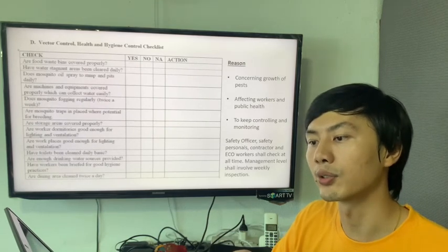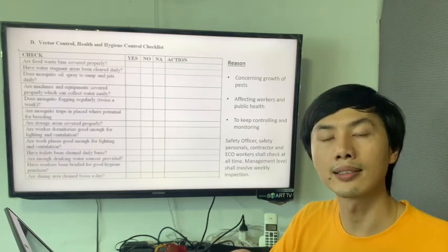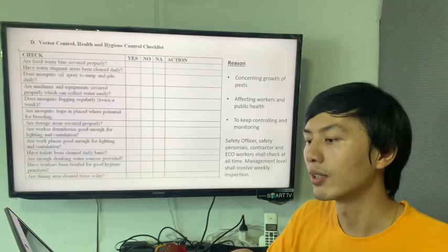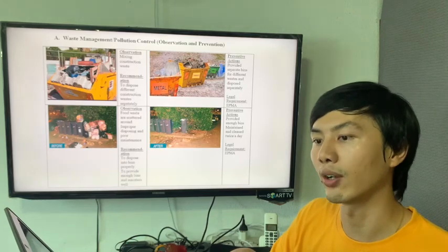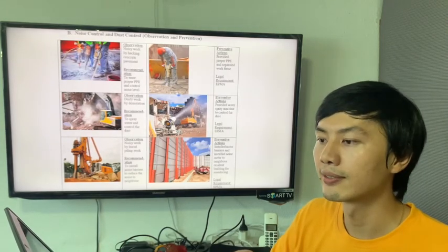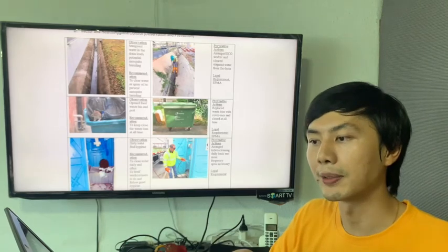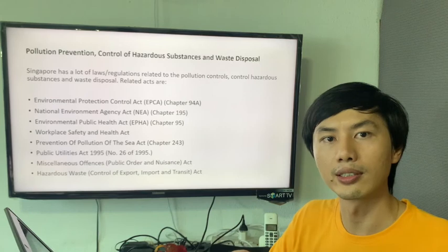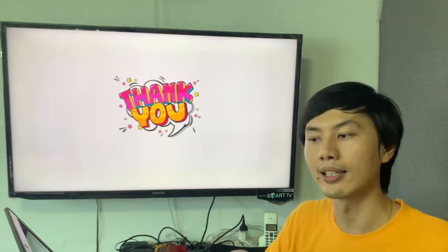Fatal control and health and hygiene control checklists are one of the most important for our workers' health and environmental health. We must take care of this. Here are the reasons, inspections, and how frequently they should be carried out. These are observations and prevention of waste management — before and after. Noise control and dust control — observations and prevention. Silt control — observations and prevention. Health hygiene control — observations and prevention. We have a lot of laws and rules and regulations. Here are the Singapore rules and regulations we must follow. References are listed here. Our Group B2 presentation ends here. Thank you.